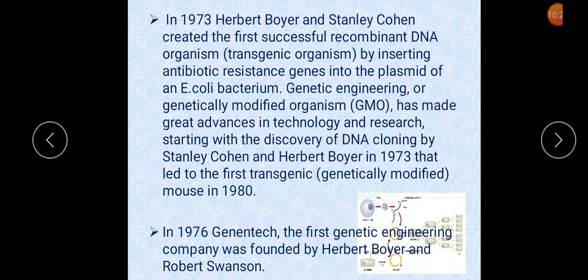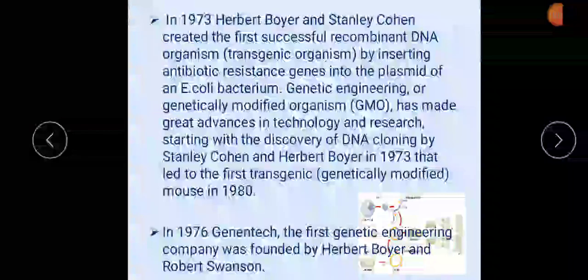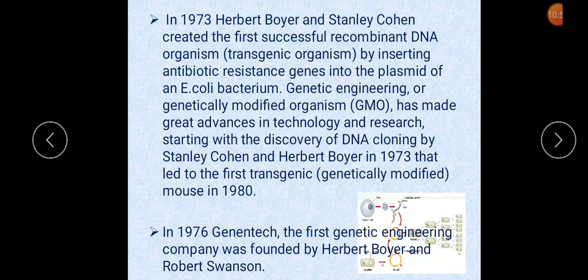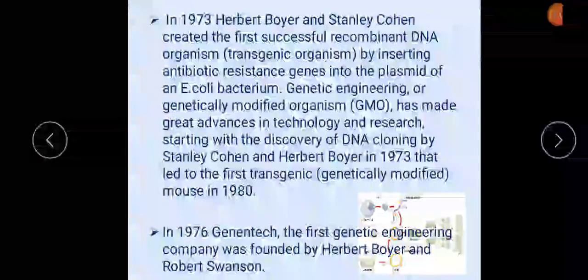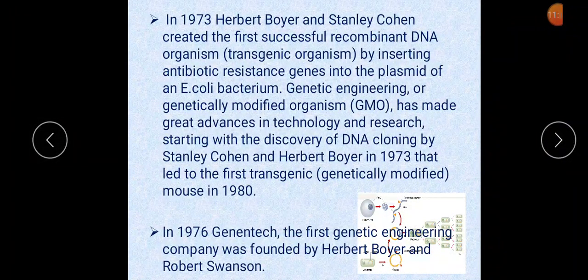Genetic engineering and genetically modified organisms have made great advances starting with the discovery of DNA cloning by Cohen and Boyer in 1973, which led to the first genetically modified organism — a transgenic mouse — in 1980. In 1976, the first genetic engineering company was founded by Herbert Boyer and Robert Swanson. Since 1976, commercialization of genetically modified food, feedstock, and medicines — including insulin, growth hormone, erythropoietin, factor 9, interferon, interleukins, and tissue plasminogen activator — has been underway.